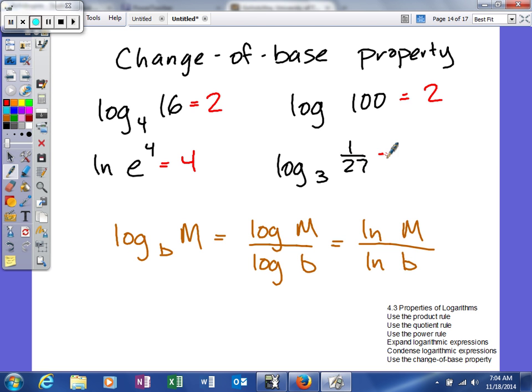And log base 3 of 1 over 27. Since our answer is a fraction, we know it's negative. When we move that 3 down here, 3 to what power will give us 27? That'll be the 3rd. So we've done these a lot of times, and we can simplify the logarithms.